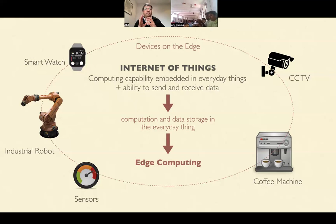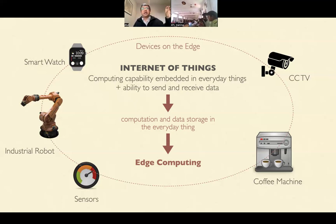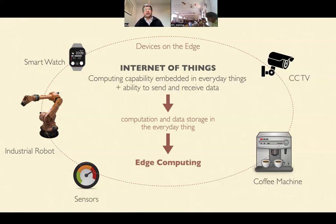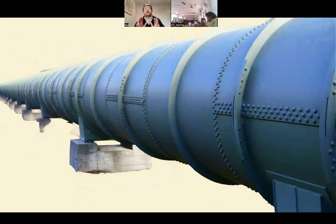Understand the difference between the two architectures. In the first architecture, the machine learning model was in the cloud, and the device talked to the cloud — that's how ML models were running. But increasingly we are talking about embedded computing, where we embed the computing in the edge device itself, and some sort of machine learning model can work right on that device.